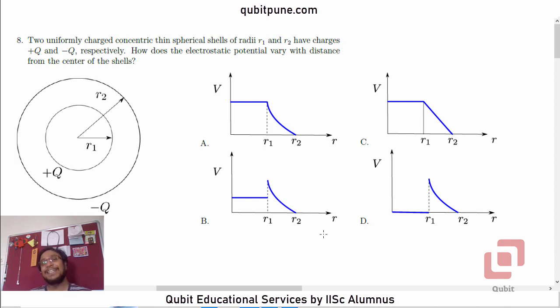Namaste, welcome back to our channel. My name is Pranesh, I am the founder of Qubit Educational Services and an IISc Bangalore alumnus. In this video series, we are solving the physics MCQs from the ICER aptitude test 2022 paper which is available on the official website. In this video, we will be solving MCQ number 8 which is based on the concept of electric potential. The relevant chapter in physics is the second chapter from 12th physics in NCERT, titled Electric Potential and Capacitors.